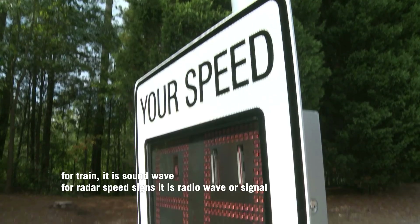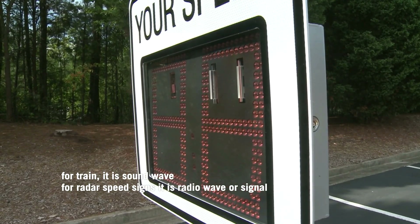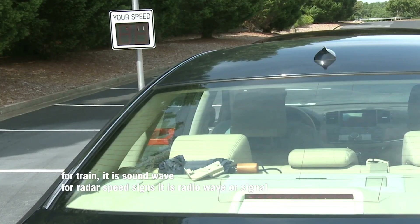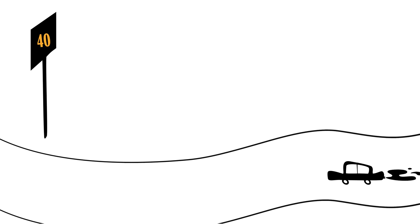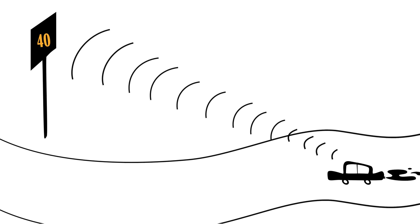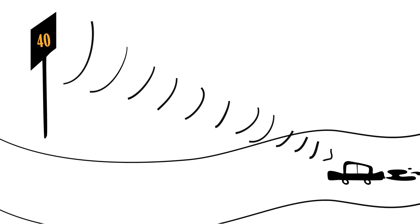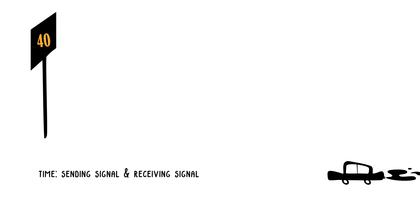In radar speed signs, it is radio waves — or signals — that are used. The speed signs release radio waves or signals directed at the car coming towards them. The waves strike the object, which is the car, and reflect back to the radar detector. The speed sign then measures the time difference between sending and receiving the signals.